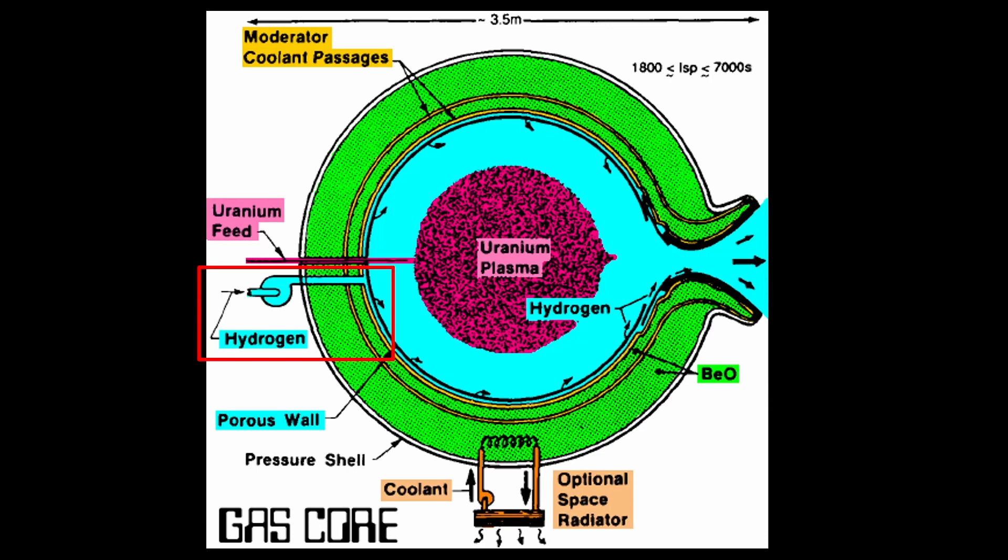One of the problems is that about 5% of the energy is neutrons and gamma rays, and they heat up the combustion chamber. That can be cooled with hydrogen, but it limits your power, and therefore your specific impulse to about 2,000 to 3,000.